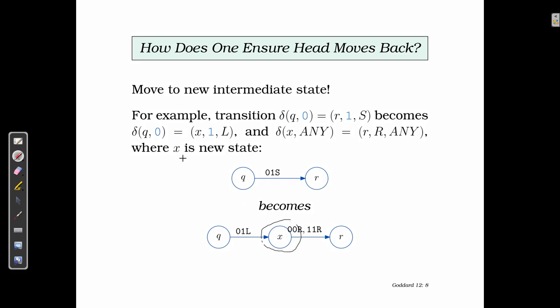What we are essentially doing here is that in case of this transition, which is delta(Q, 0), the transition function delta, we check in the state Q we got the input 0. And then, in this case, we were going to move to the new state R. We are going to write down a symbol and then we do a stay.